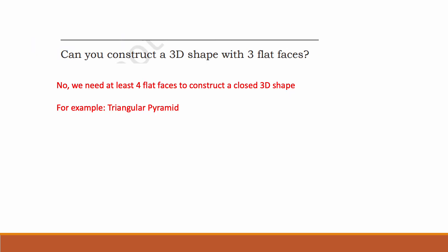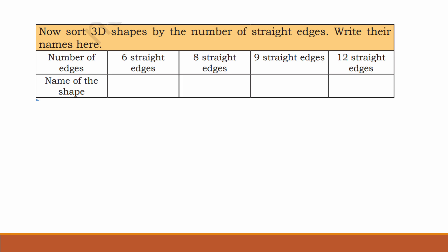Can you construct a 3D shape with three flat faces? No — we need at least four flat faces to construct a closed 3D shape, for example a triangular pyramid. Now sort 3D shapes by the number of straight edges. A shape with six straight edges is a triangular pyramid.